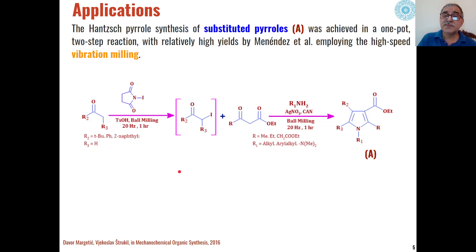Substituted pyrroles can also be synthesized when we use mechanical reactions like ball milling in presence of N-iodosuccinimide. When this is reacted with ketones, this will be converted into alpha-iodo ketones.